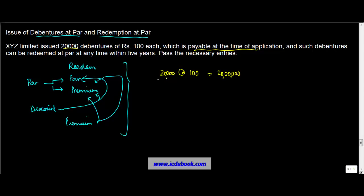And such debentures can be redeemed at par, so the redemption price is also 20 hundred thousand. I call this as RP and I call this as IP - IP means the issue price and RP means the redemption price. So when the issue price and the redemption price are equal, there is no discount, there is no premium.